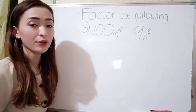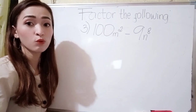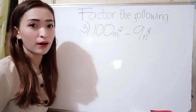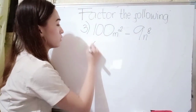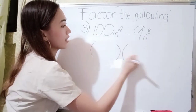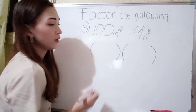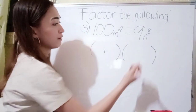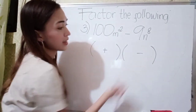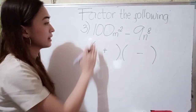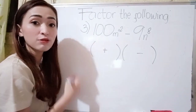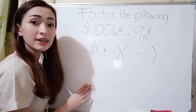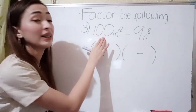For number 3, we have 100m squared minus 9n raised to the 8th power. Again, write a grouping symbol, and then in our left-hand side we have plus, and in our right-hand side we have minus. What is the square root of 100? The square root of 100 is 10, because 10 times 10 is 100.